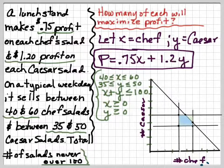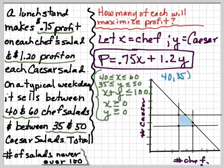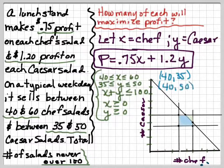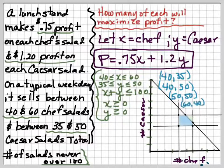Now what I want to do is identify the vertices, which I've put little black dots there. And I did a little erasing here so we have a little more room. So my vertices are 40, 35, 40, 50, 50, 50, 60, 40, and 60, 35.